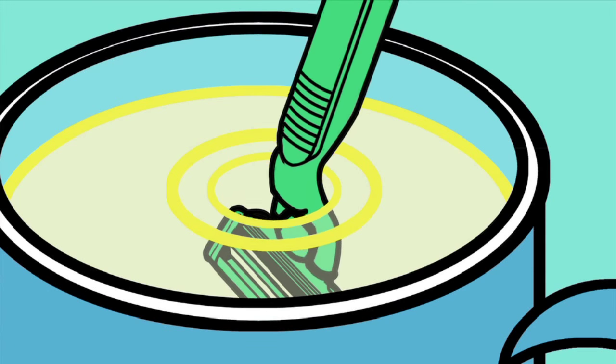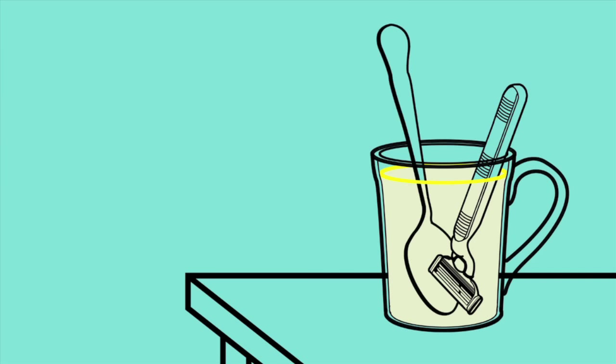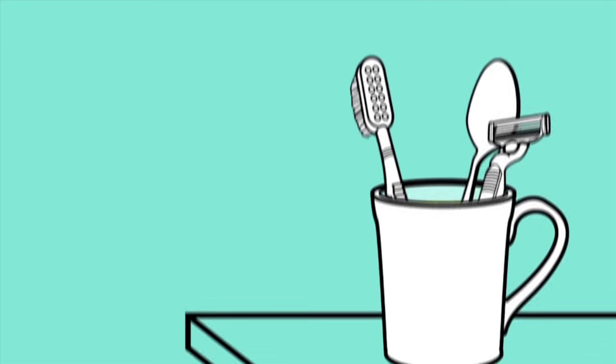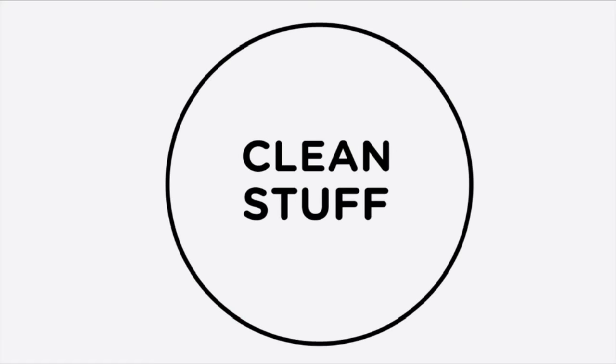Put in your razor, spoons, toothbrushes, tattoo equipment, and anything else that has come into contact with blood. Soak for 30 minutes and then rinse under the cold tap. Your stuff is now clean.